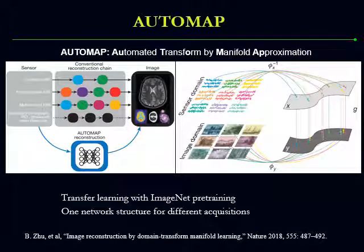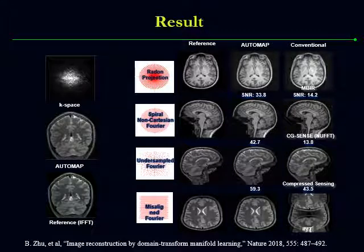This is another example on AutoMAP, published in Nature in 2018. In this work, they learn a nonlinear relationship with a neural network between the k-space domain and the image domain. ImageNet pre-training was adopted to initialize the network parameters, and the same network structure was constructed to handle different acquisitions. AutoMAP has shown better reconstruction results compared to conventional approaches, and also better quantitative indicators like signal-to-noise ratios.